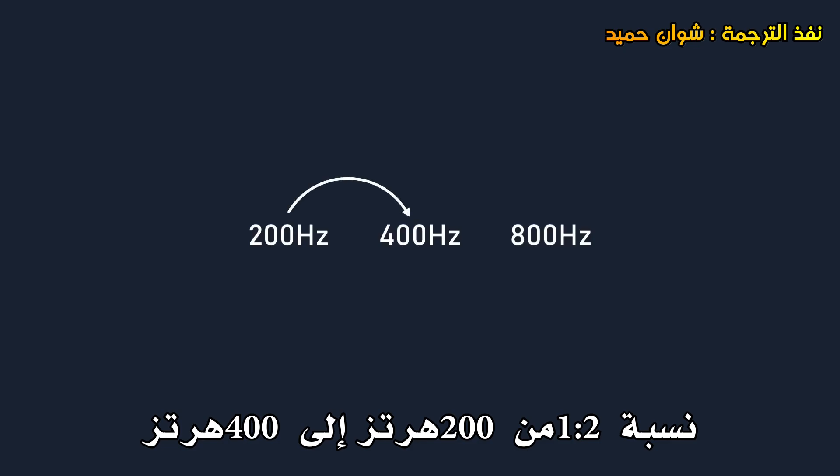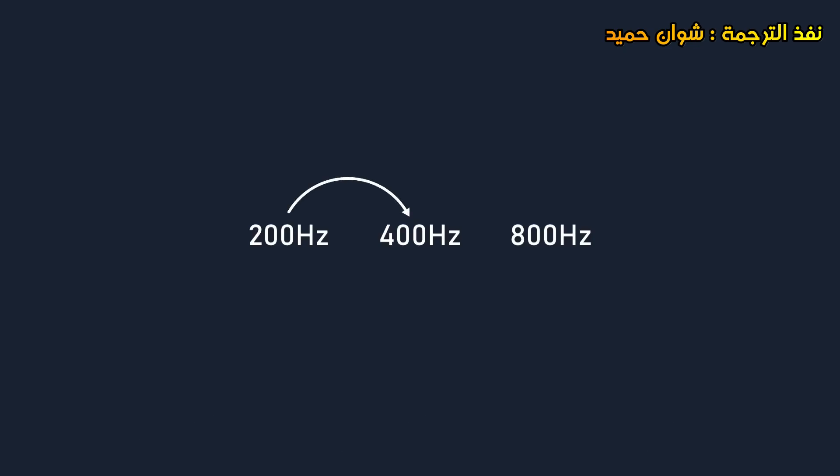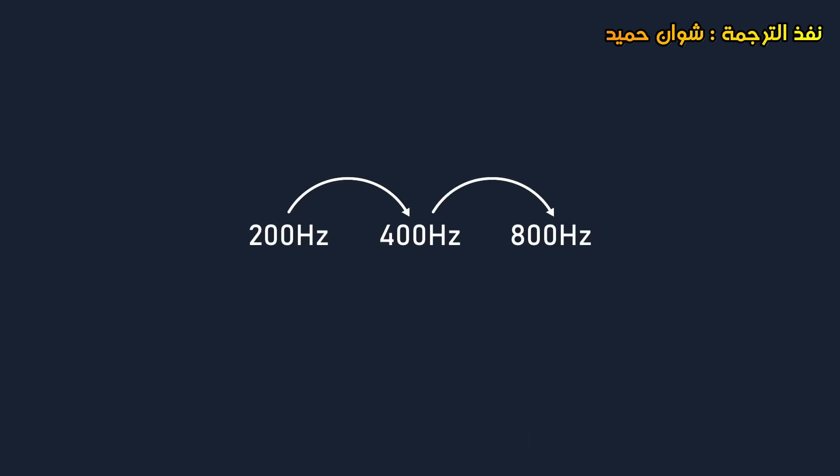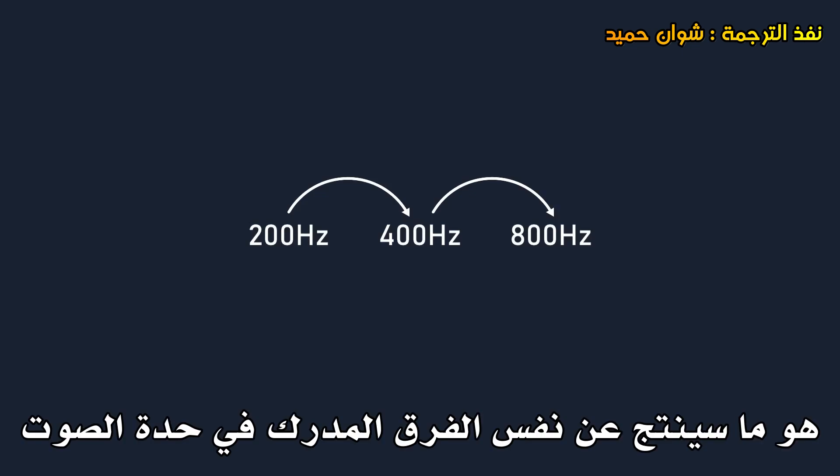Rather, the same ratio between different frequencies — for example a 1 to 2 ratio, from 200 to 400 hertz, and then from 400 to 800 hertz — is what will result in the same perceived difference in pitch.